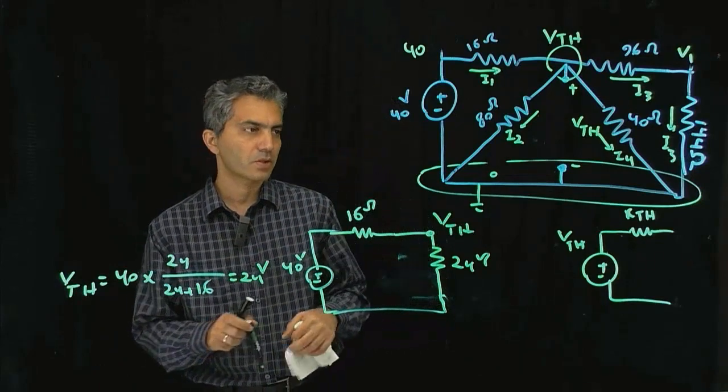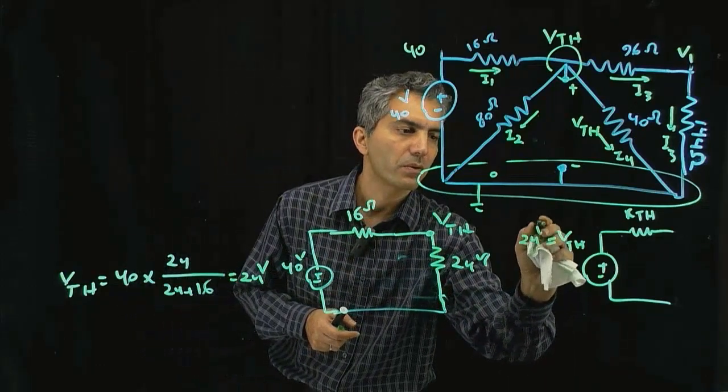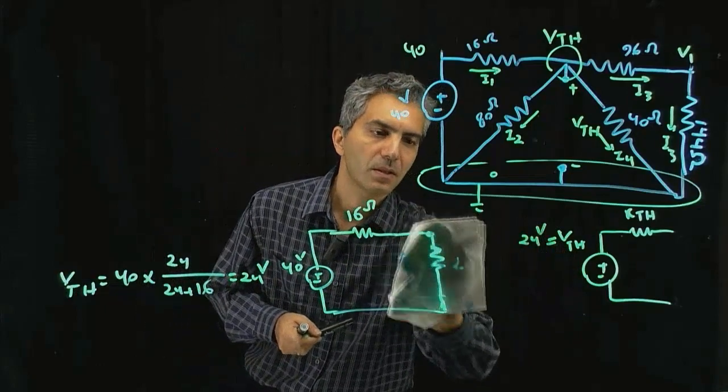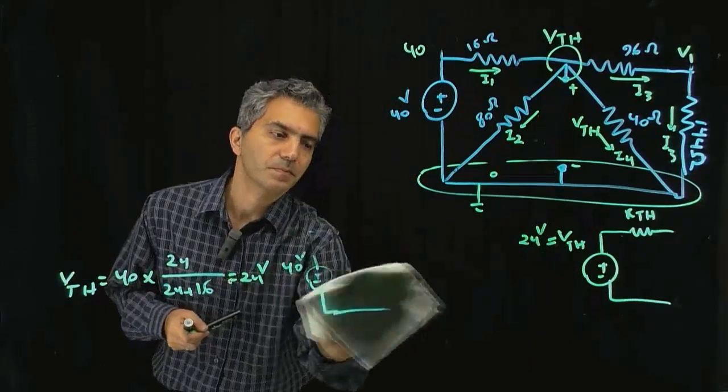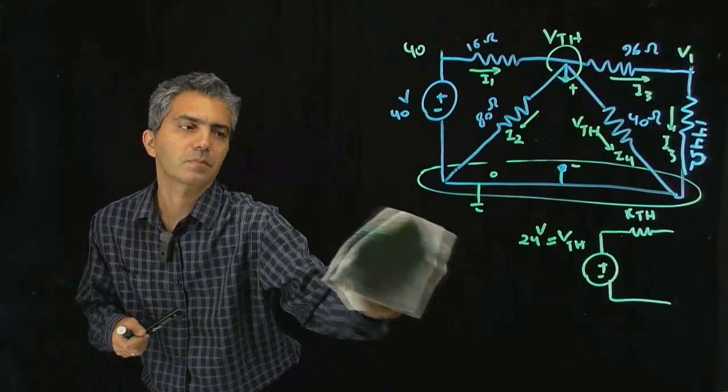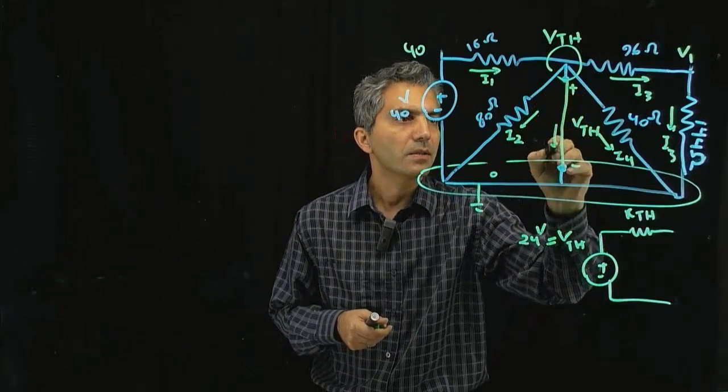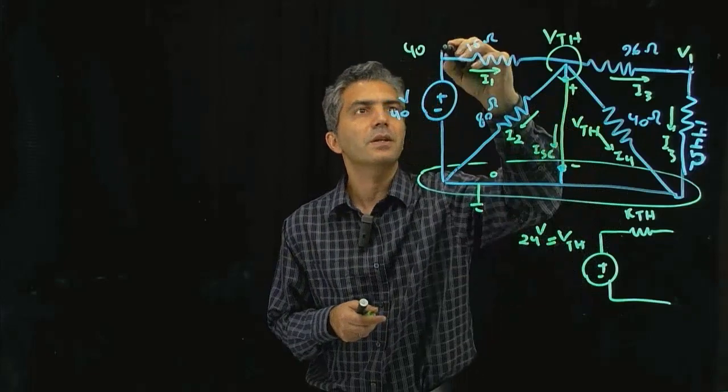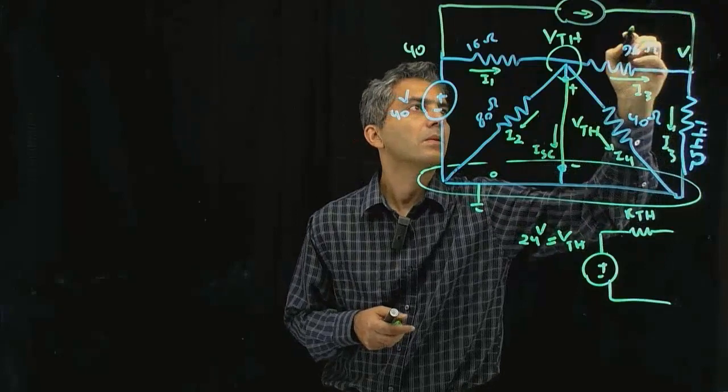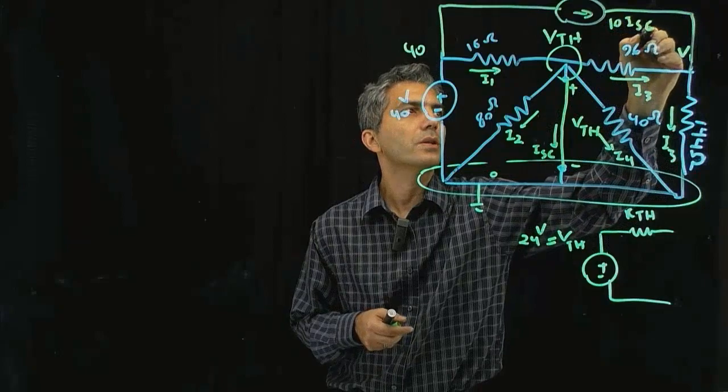The next step is to calculate the short circuit current. V_Thevenin we already know is 24 volts. Once I short circuit that, then there's actually I short circuit here and this actually comes back now. This is 10 times I_V, which we're calling our short circuit now.